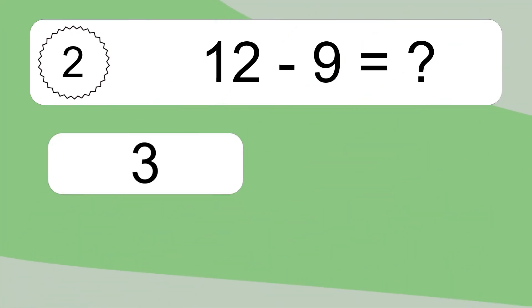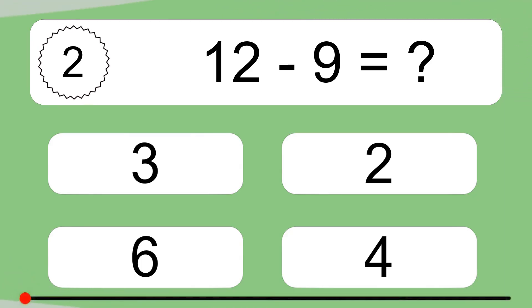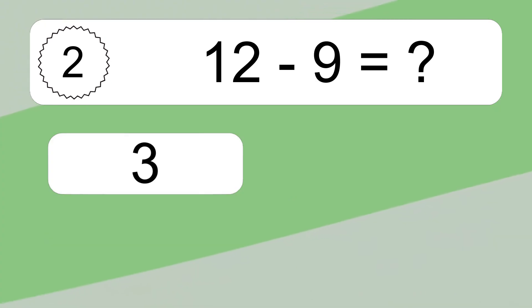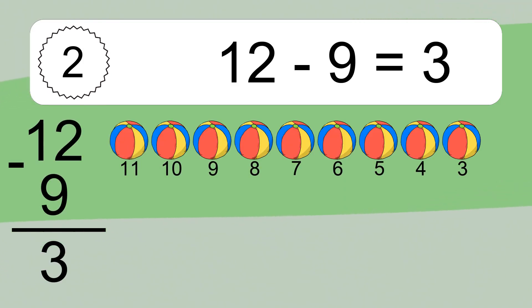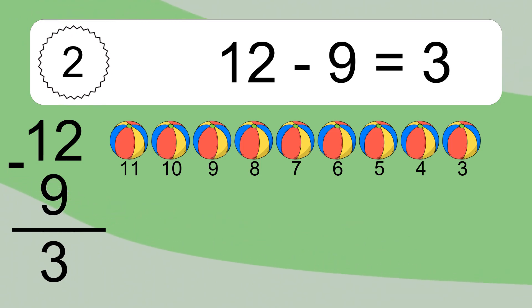12 minus 9 equals what? 12 minus 9 equals 3. Let's count it. 11, 10, 9, 8, 7, 6, 5, 4, 3.